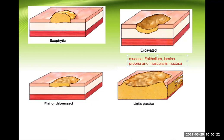Another type is flat or depressed — slightly depressed but not forming an ulcer, not even going to the submucosal area. Another important type is linitis plastica, when this flat or depressed type involves the whole thickness of the stomach, leading to loss of elasticity. That is why we call it leather bottle type of stomach — a very important question from examination point of view.